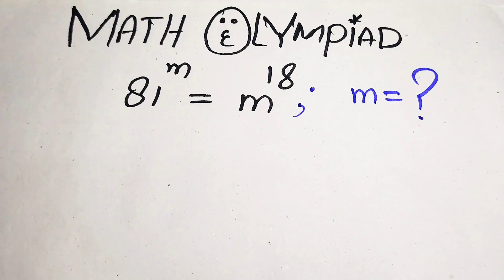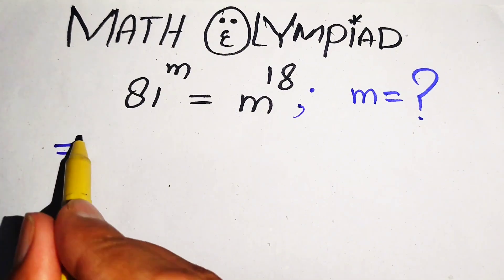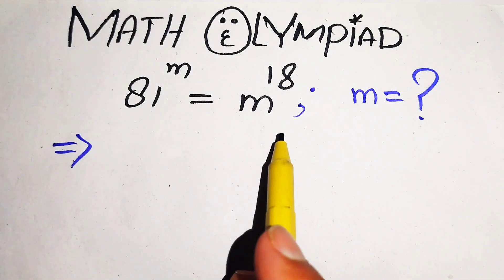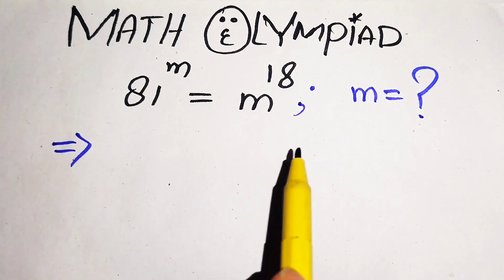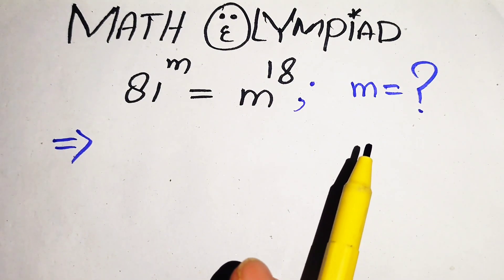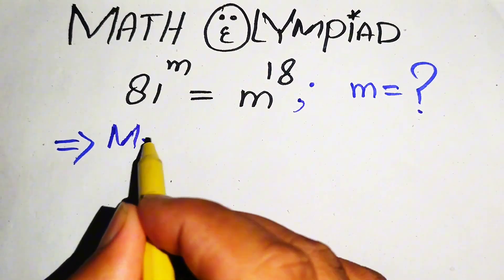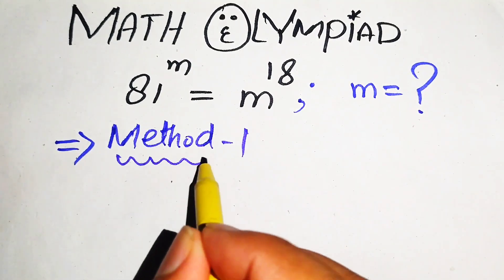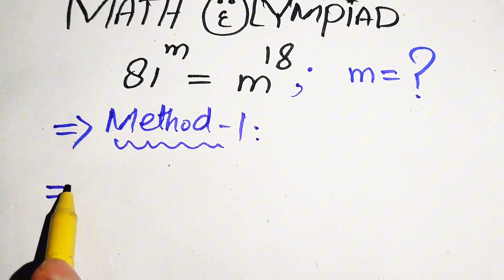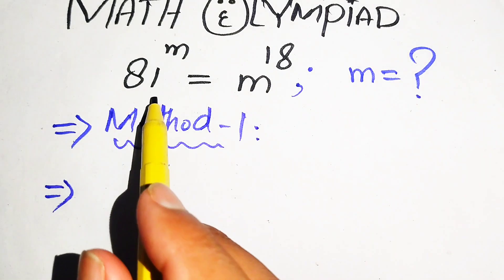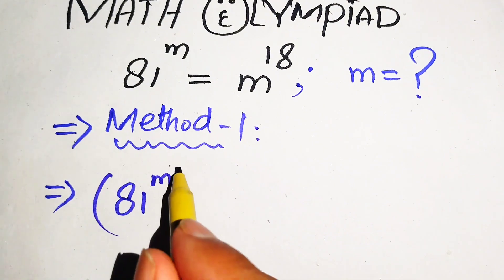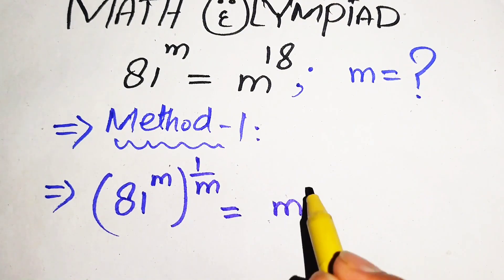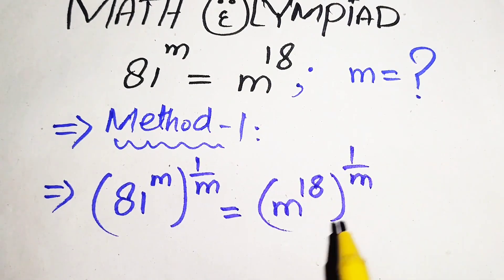The very first thing we are going to do is move the variable term m to the right hand side and the constant term 18 from the right hand side to the left hand side. We solve this by two methods. In method one, we take the mth root on both sides, written as 81 to the power of m, whole power 1 over m, equals m to the power of 18, whole power 1 over m.